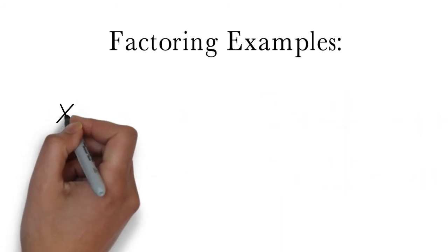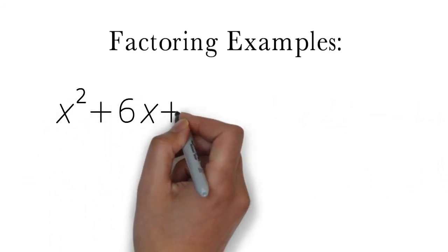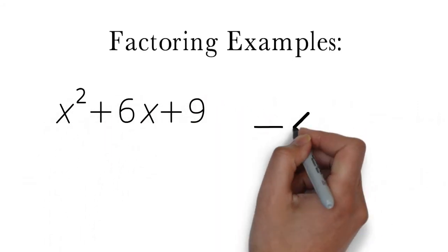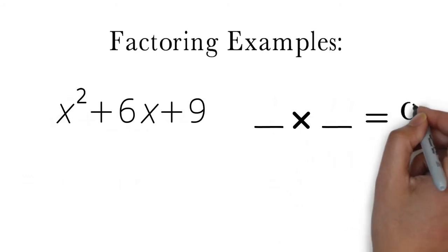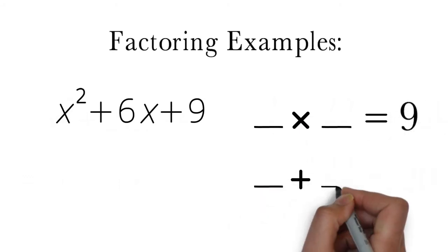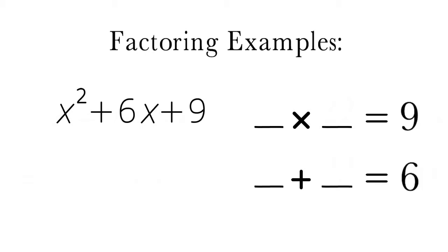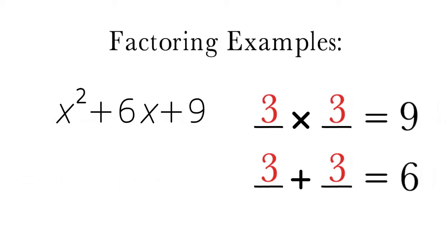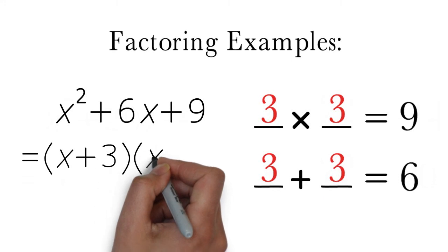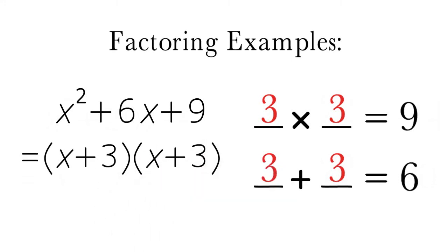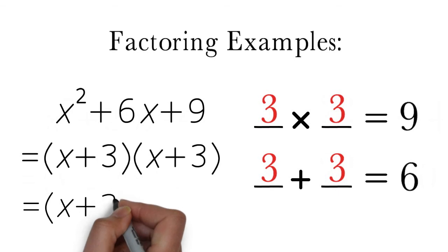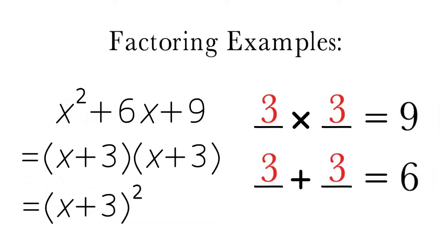Finally, consider the trinomial x squared plus 6x plus 9. In order to factor this, we need to find two numbers that multiply to 9 and add up to 6. The only numbers that do this are 3 and 3. Therefore, we can factor x squared plus 6x plus 9 as a product of the binomials x plus 3 and x plus 3. Since the two binomials are the same, we can write this as x plus 3 all squared.